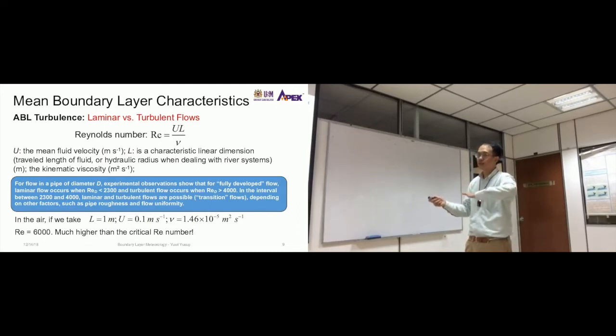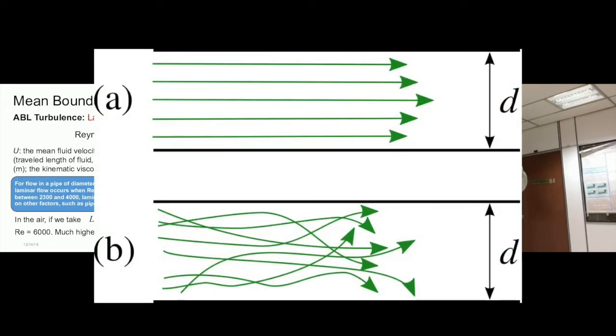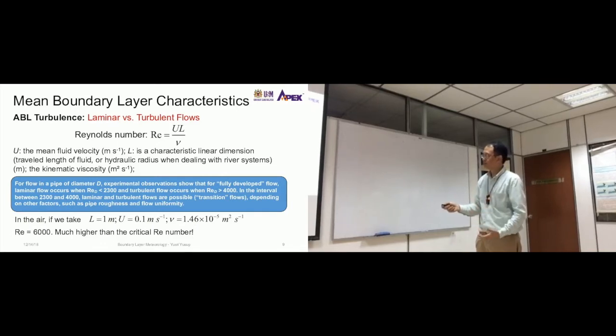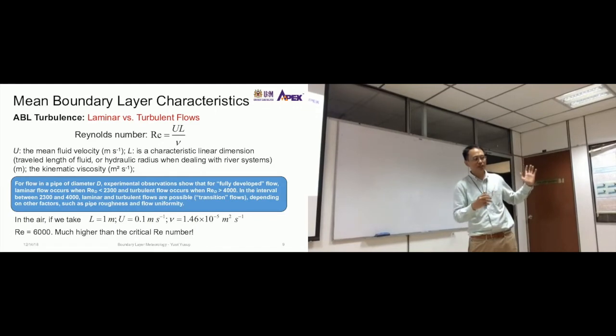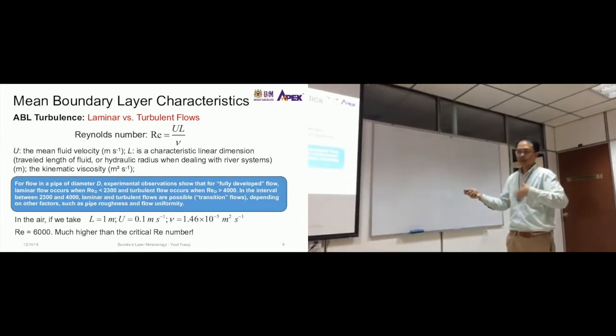Of course we calculate the Reynolds number using this equation. U is mean wind speed, L is length, horizontal length, and V is kinematic viscosity. So usually we use this Reynolds number to assess the type of flow inside a pipe for engineering purposes. The flow inside the pipe could be laminar or turbulent. If laminar is generally slower in speed and separated into layers, you can see the different layers with the same velocity. But if turbulent is more turbulent, the profile will be something like that. So if you use this example here for flow in a pipe of diameter D, experimental observations show that for fully developed flow - you see when you exert a force on the fluid and it flows down a pipe, it takes some time for the flow type to be stable.